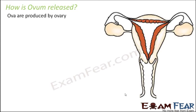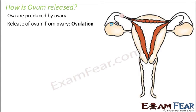This process is again very important — that is the process by which the egg is released by the ovary. So the ovum is produced inside the ovary, and after that it gets released. This release of ovum from the ovary is known as ovulation.